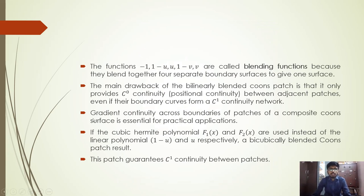The functions −1, 1−U, U, 1−V, and V are called blending functions because they blend together four separate boundary surfaces to give one surface. The main drawback of the bilinearly blended Coons patch is that it only provides C0 continuity between adjacent patches, even if their boundary curves form a C1 continuity network.